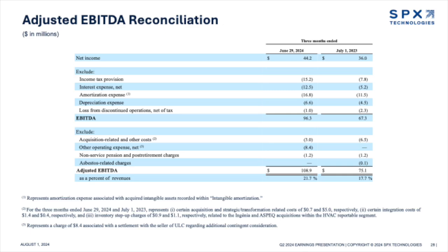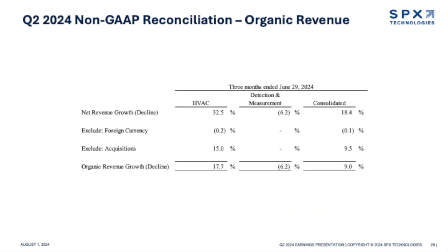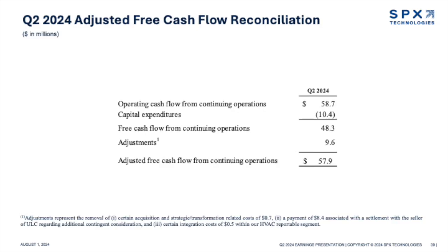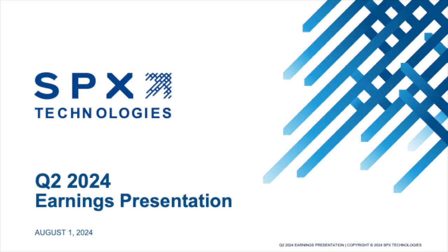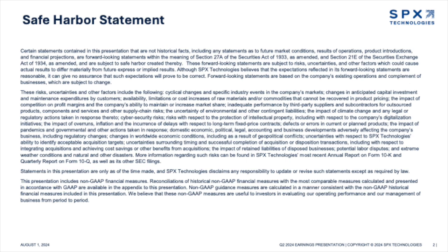Turning now to our financial position at the end of the quarter. We ended Q2 with cash of $133 million and total debt of $790 million. Our leverage ratio, as calculated under our bank credit agreement, was 1.6 times. We anticipate our leverage ratio declining below the lower end of our target range of 1.5 to 2.5 times by year-end, assuming no additional capital deployment. Adjusted free cash flow for the quarter was approximately $58 million. We are increasing our guidance for adjusted EPS to a range of $5.45 to $5.60, compared with a prior range of $5.15 to $5.40. The new midpoint reflects year-on-year growth of approximately 28%.